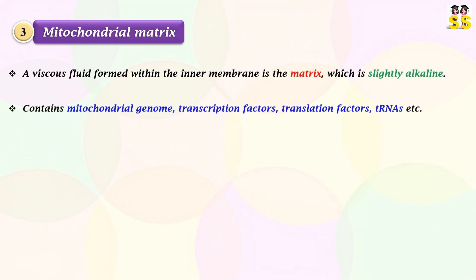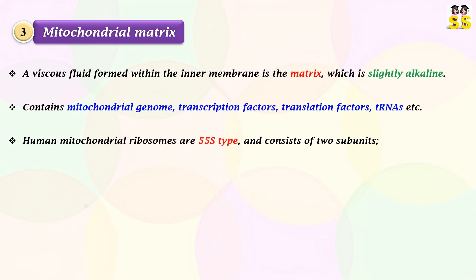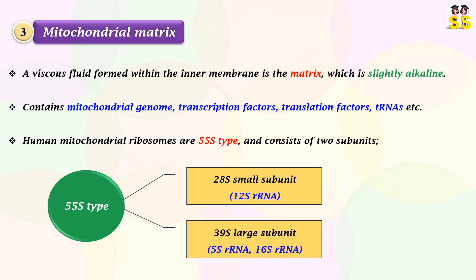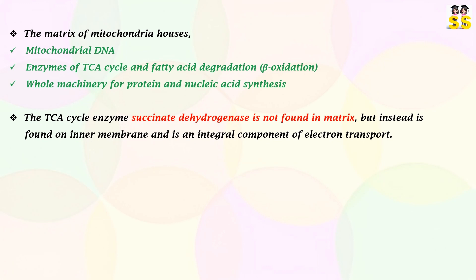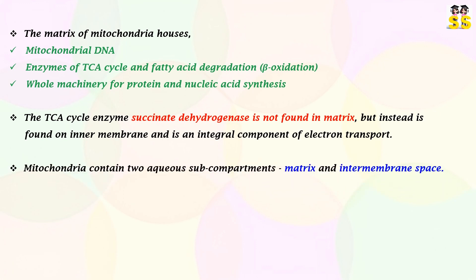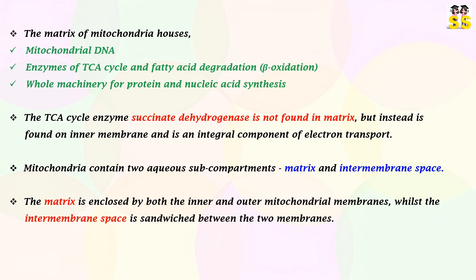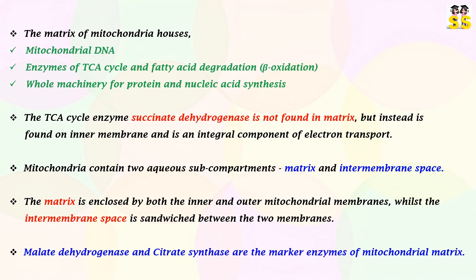The mitochondrial matrix is a viscous, slightly alkaline fluid formed within the inner membrane. It contains the mitochondrial genome, transcription factors, translation factors, and tRNAs. Human mitochondrial ribosomes have a lower sedimentation coefficient — 55S type — composed of two subunits: small subunit 28S and large subunit 39S. The matrix houses mitochondrial DNA and accommodates enzymes of the TCA cycle, fatty acid oxidation, and the machinery for protein and nucleic acid synthesis. Succinate dehydrogenase is the only TCA cycle enzyme not found in the matrix but rather on the inner membrane. Malate dehydrogenase and citrate synthase are the marker enzymes of the mitochondrial matrix.